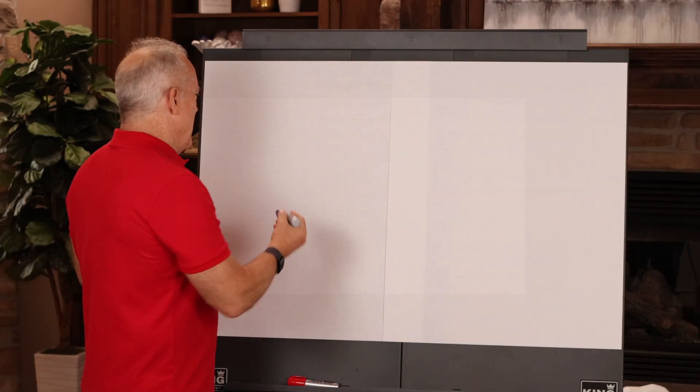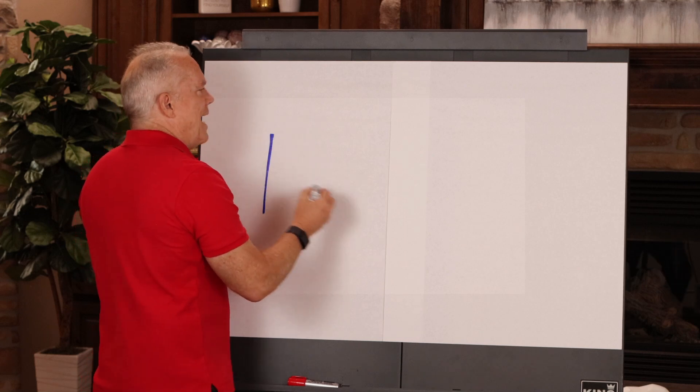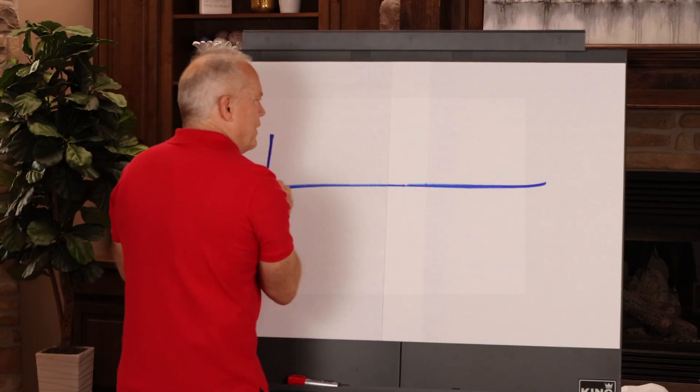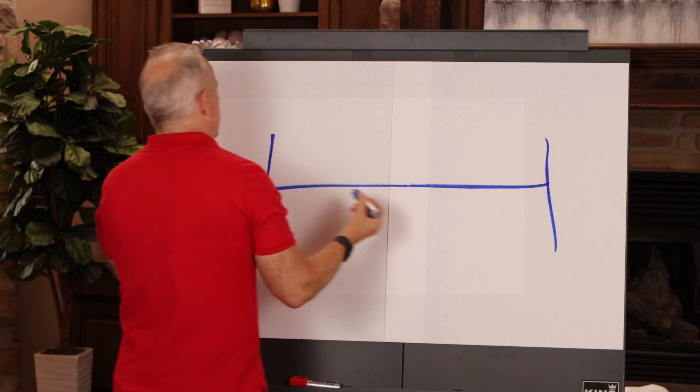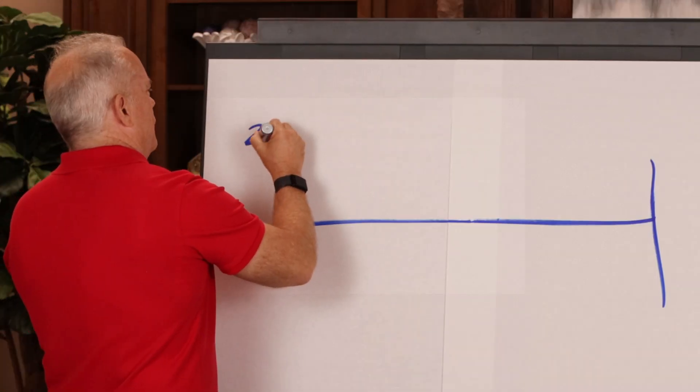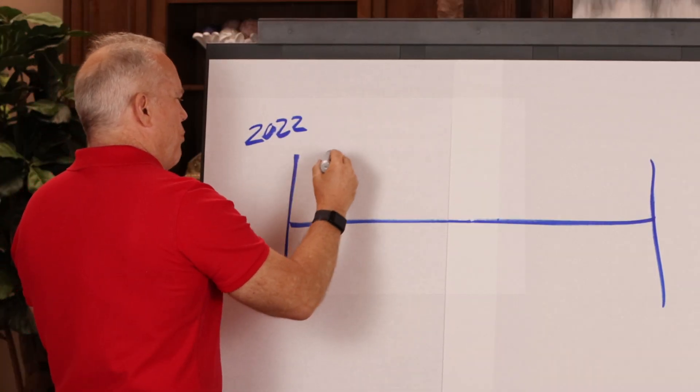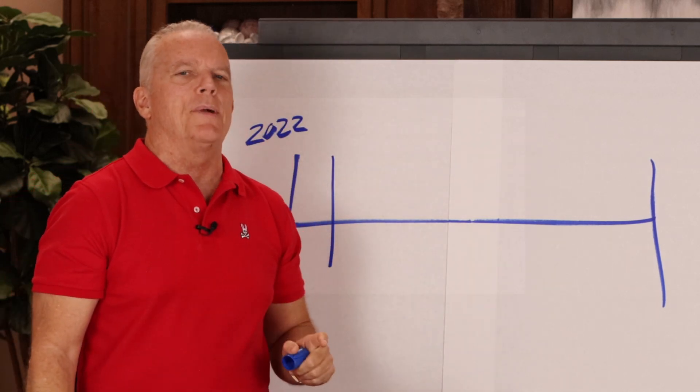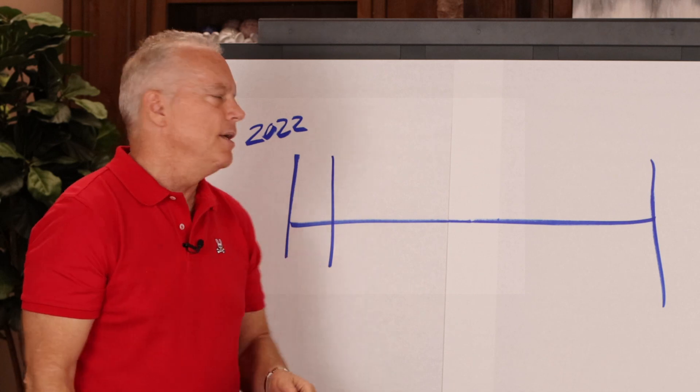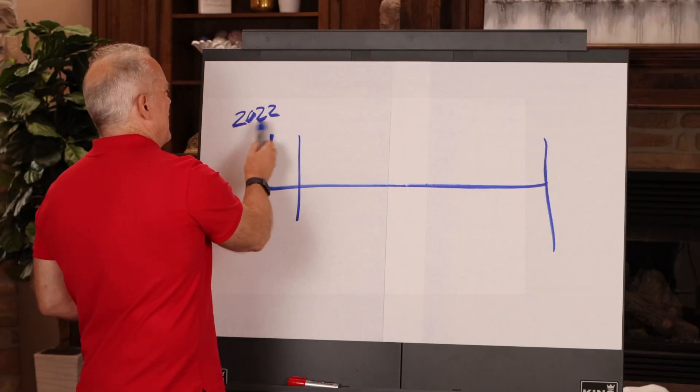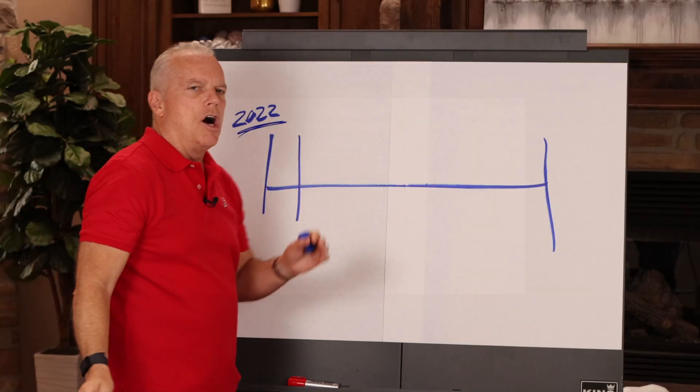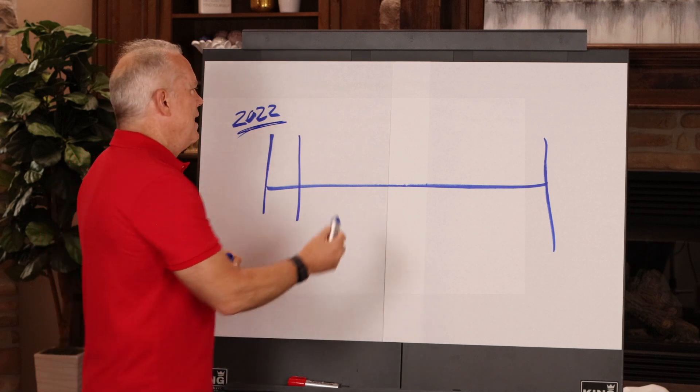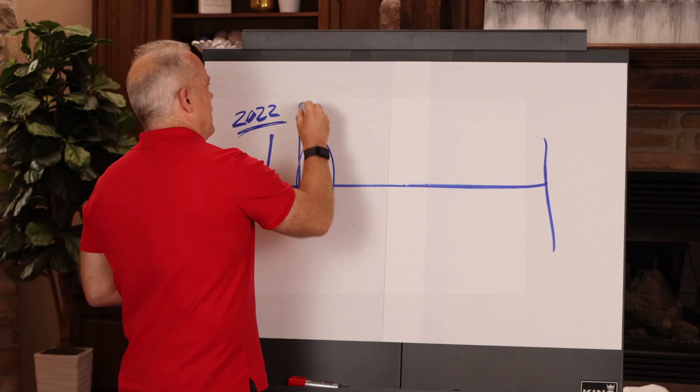If we have a timeline down here, and we've got a tax lien certificate, and let's say that this is 2022, right here. A property owner has to be delinquent one year before a property tax lien can be put on their property. So, in other words, you're not going to see a sale on a 2022 lien until sometime in 23.